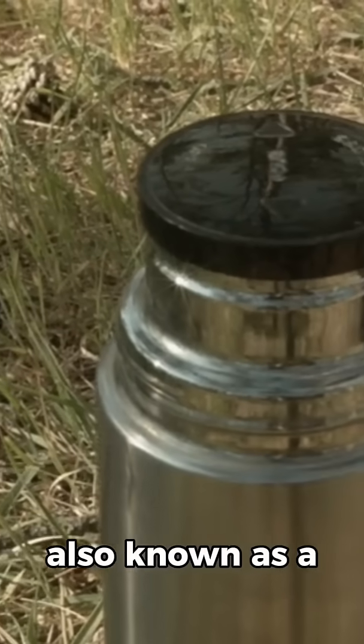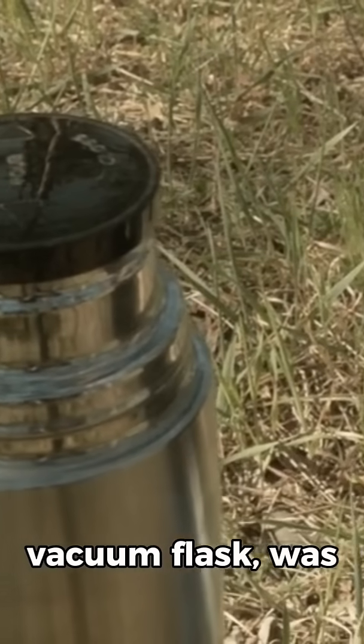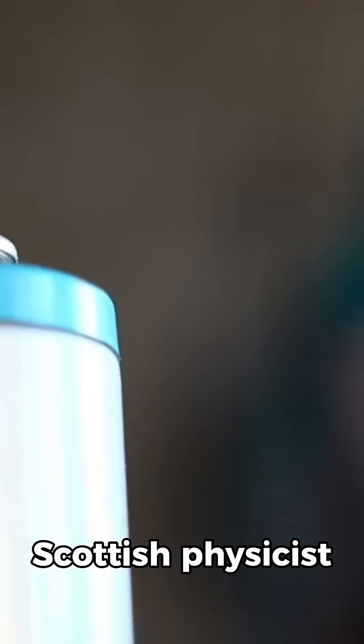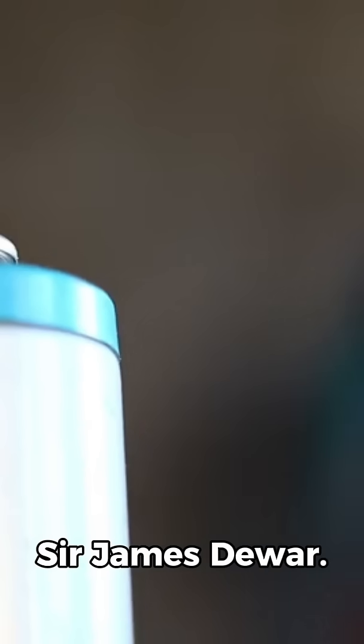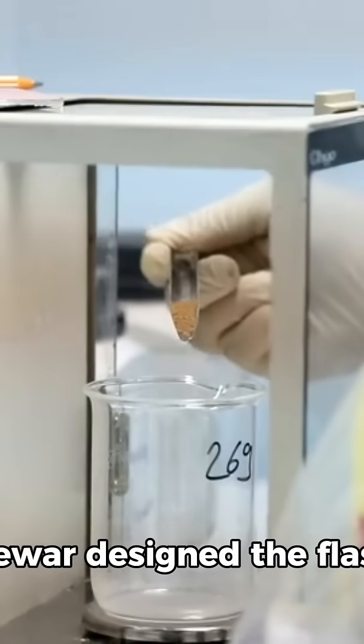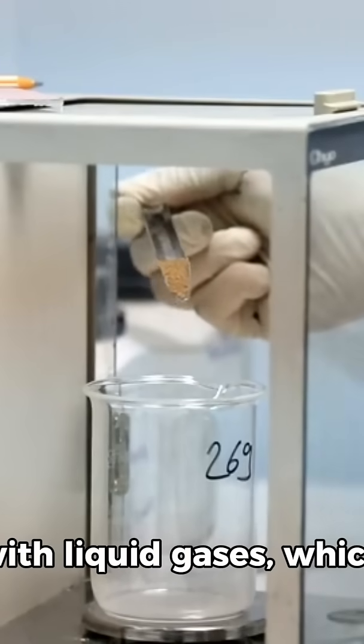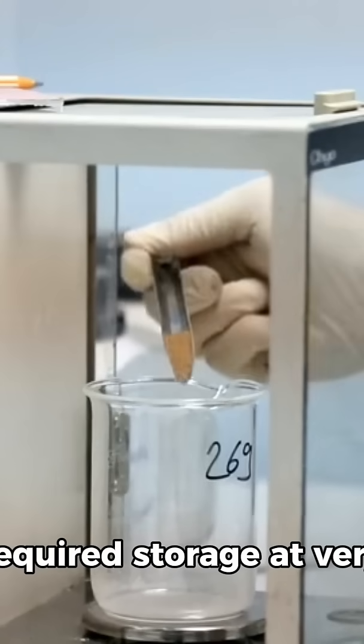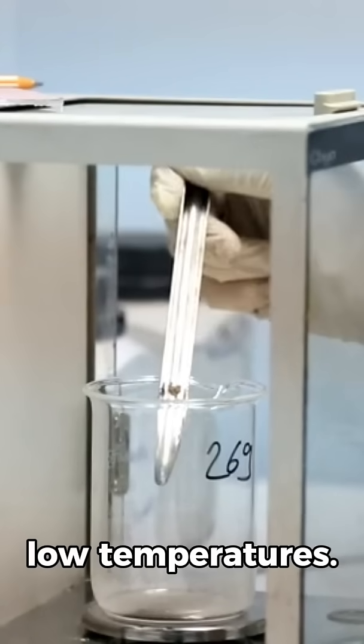The thermos flask, also known as a vacuum flask, was invented in 1892 by Scottish physicist Sir James Dewar. Dewar designed the flask as part of his experiments with liquid gases, which required storage at very low temperatures.